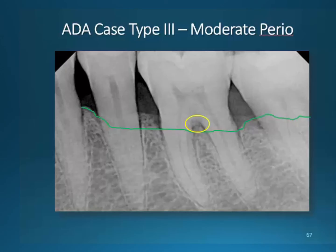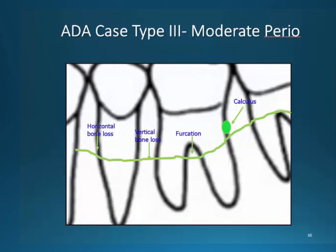Not only does bacteria cause periodontal disease, but occlusal trauma may also have aided in the loss of bone. If you had to draw the previous image on your patient's chart, this is what you would be seeing — notice I have identified the bone loss and the furcation. There is also one more item to include: calculus. Bone loss and calculus should be charted in green. You will use a green pencil when drawing these lesions in your clinical charts and for assignment purposes in this course.